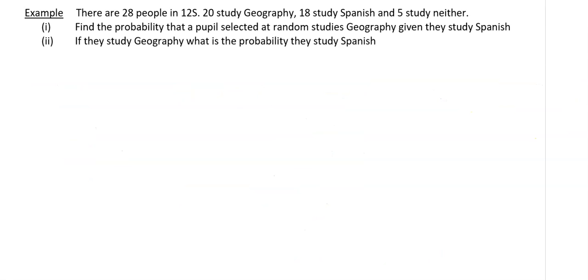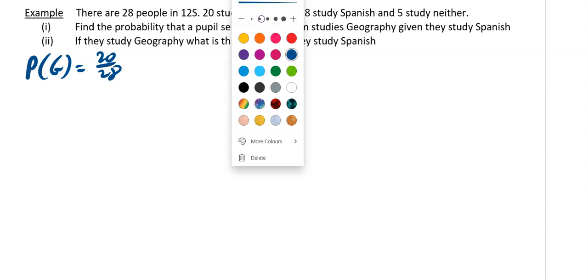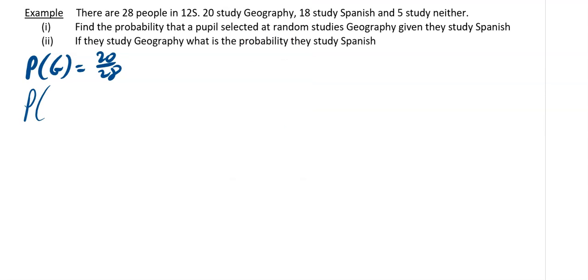Next example: there are 28 people in 12S. 20 study geography, 18 study Spanish, and 5 study neither. We need to find the probability that a person selected at random studies geography given they study Spanish, and then part 2, if they study geography what is the probability they study Spanish. So we have P(G) = 20/28, P(S) = 18/28, and P(neither) = 5/28.